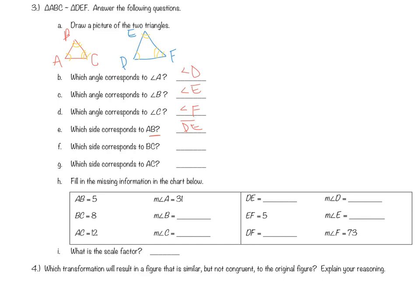Which side corresponds to BC? EF. The line over it means side length. And which side corresponds to AC? DF.